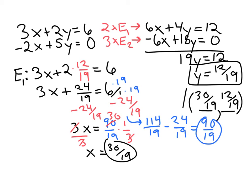This ordered pair is the solution to the system of two equations with two variables, with x equal to 30 over 19 and y equal to 12 over 19.